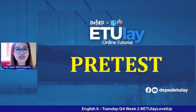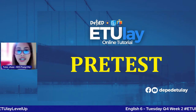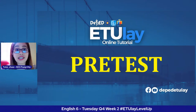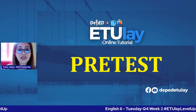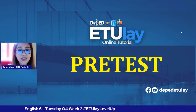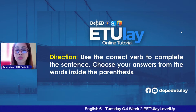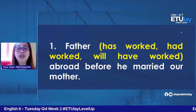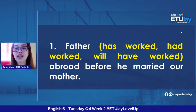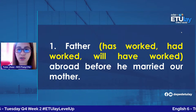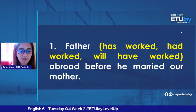Before we begin, let us first find out how much you know about today's lesson. Read and answer all the items in this activity and comment your answers. For the direction: use the correct verb to complete the sentence, choosing your answers from the words inside the parenthesis. Number one — father ___ abroad before he married our mother: has worked, had worked, or will have worked? Type your answer in the comment box now.